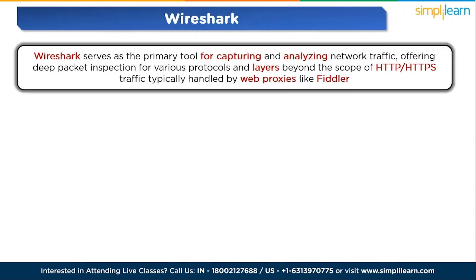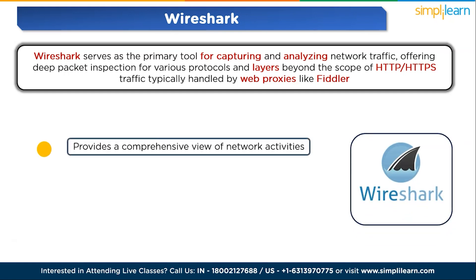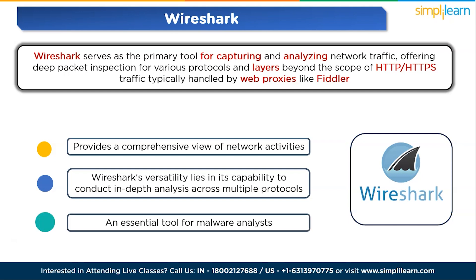The seventh and final tool is Wireshark. Wireshark serves as the primary tool for capturing and analyzing network traffic, offering deep packet inspection for various protocols and layers beyond the scope of HTTP or HTTPS traffic typically handled by web proxies like Fiddler. The tool excels in providing a comprehensive view of network activities, allowing for the extraction of files from packet captures that may have been downloaded by malware during its operation. Wireshark's versatility lies in its capability to conduct in-depth analysis across multiple protocols, making it an essential tool for malware analysts seeking a holistic understanding of network interactions.